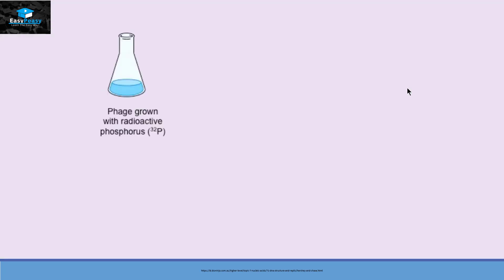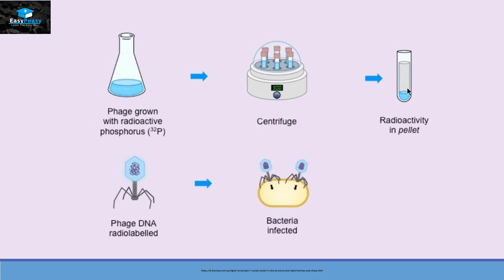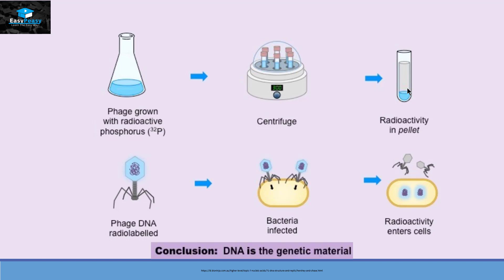In the next phase, they grew bacteriophage with radioactive phosphorus-32. After centrifugation, the radioactivity was present in the pellet and not in the supernatant. Phosphorus-32 incorporated into the DNA of the bacteriophage, which then infected the bacteria and transferred DNA inside them. After centrifugation, the viruses separated into the supernatant, but the radioactivity was present in the pellet, meaning DNA is the genetic material.